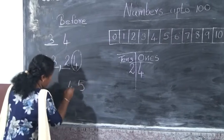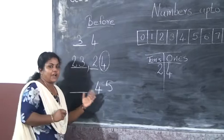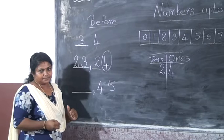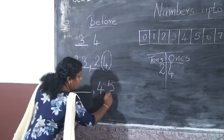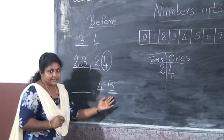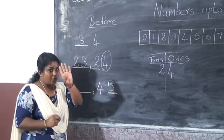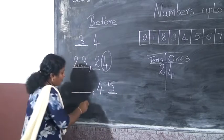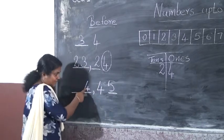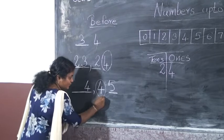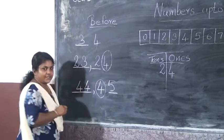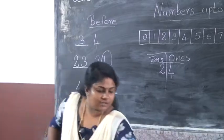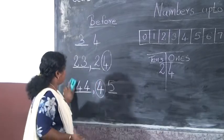Next, 45. Which is the before number of 45? First look the number in the 1s place — here it is 5. Before 5, which number? That is 4. So write 4 in the 1s place. And in the 10s place, it is 4. So the before number of 45 is 44.